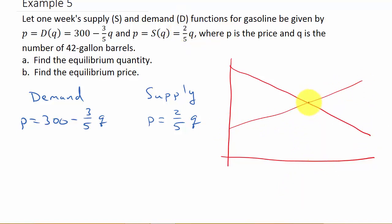We're looking for the intersection point. This is the Q axis and this is the P axis, so Q is like your x-value and P is like your y-value. The equilibrium is where they intersect, where they equal each other.